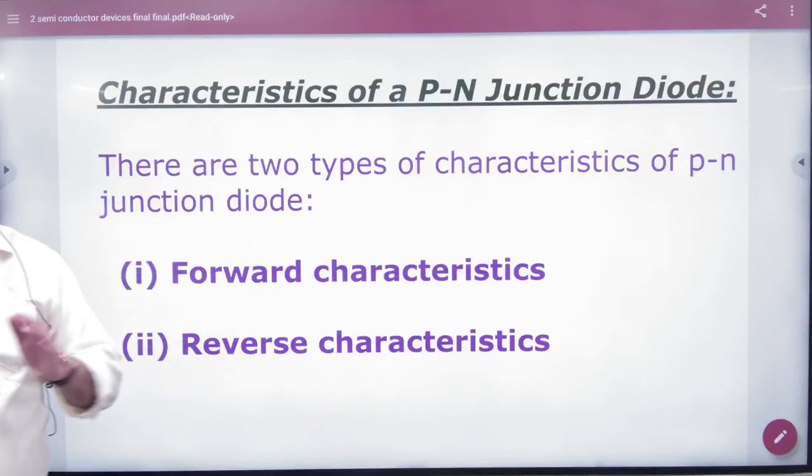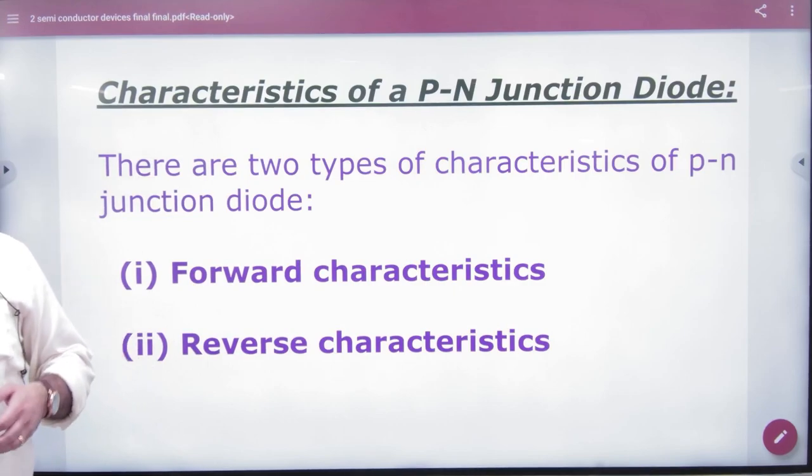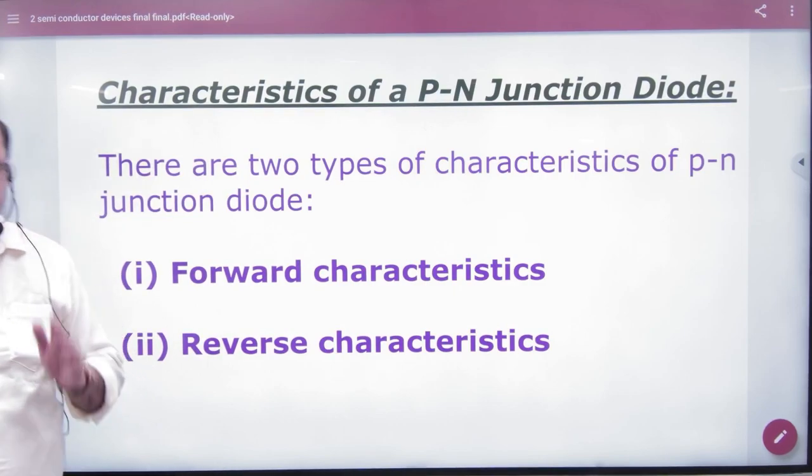The current and voltage, we call this characteristics. Sometimes we call it IV characteristics, VI characteristics, voltage characteristics, whatever we can call it.